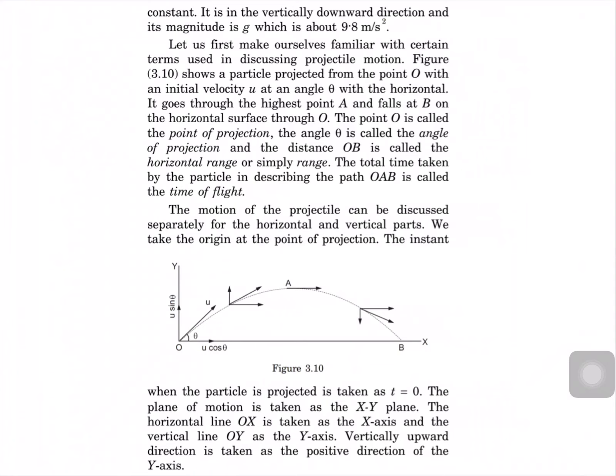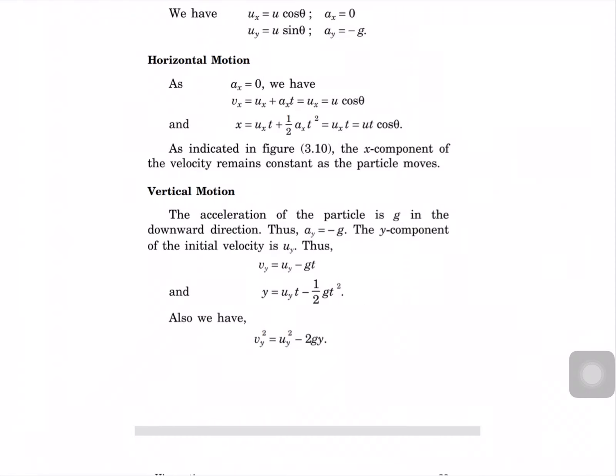At each and every point the particle has velocity components U cos theta and U sin theta. At time t equal to zero the particle is at point O only. For the x-axis, the initial velocity is U cos theta and acceleration is zero.